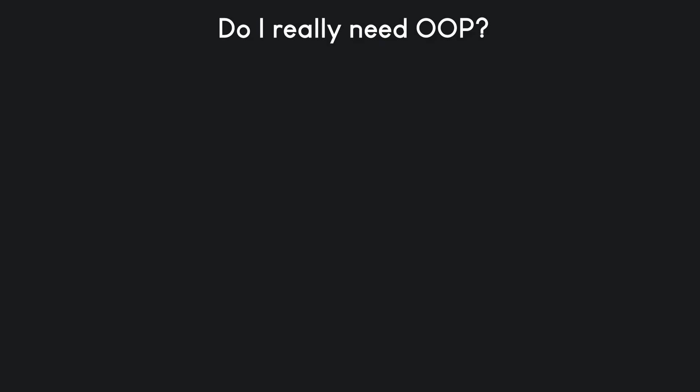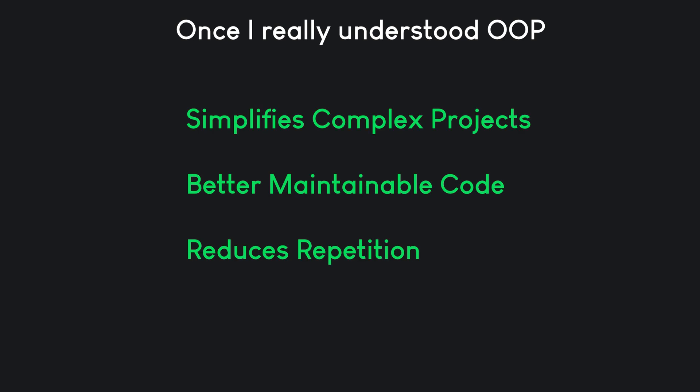At the time, I thought this abstraction was an extra layer of complexity I didn't need. But how wrong I was. Once I really understood object-oriented programming — not just how to use it, but why we use it — I realized it was the key to simplifying complex projects and writing better, more maintainable code.